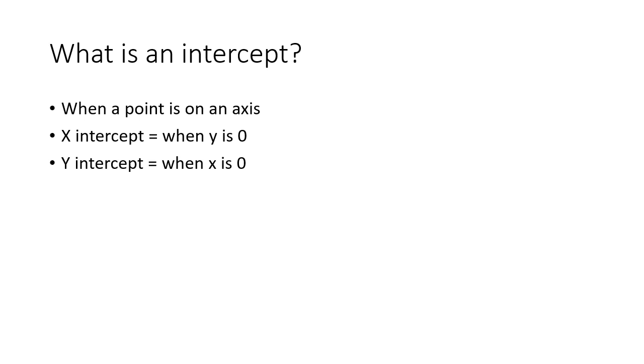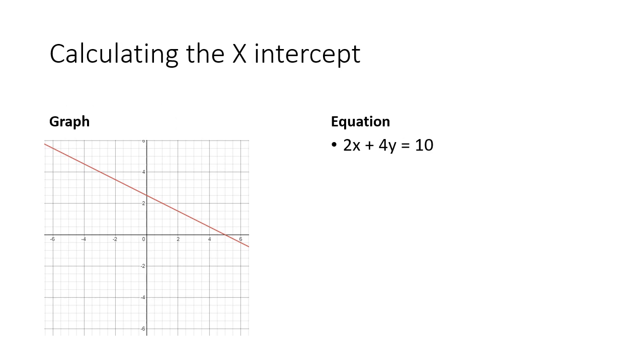We'll look at that further in the next slide. So for calculating the x-intercept specifically, I have a graph and I already said that the x-intercept is when a point hits the x-axis. So here is my x-axis, that's the horizontal. And I see that a point hits the x-axis around here.